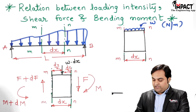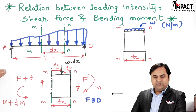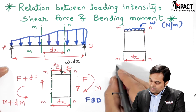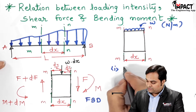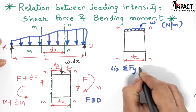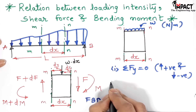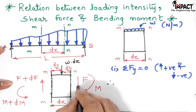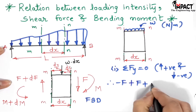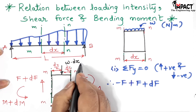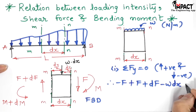Since I have drawn the free body diagram of the beam element, I can now apply the conditions of equilibrium. There are only vertical forces acting and no horizontal forces, so I use the condition ΣFy = 0, where upward forces are positive and downward forces are negative. The force F on the right-hand side acts downward, so it is −F; F plus dF acts upward, so it is positive; and the UDL converted to a point load w·DX acts downward, giving −w·DX. Setting the sum to zero: −F + (F + dF) − w·DX = 0.